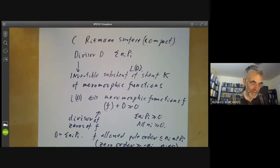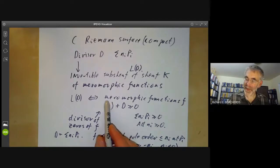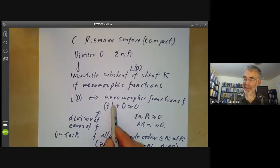First of all, this is kind of obviously a line bundle because locally it's isomorphic with the sheaf of coordinate functions, since multiplication by the meromorphic function F gives a local isomorphism.